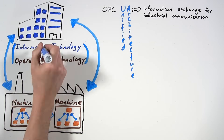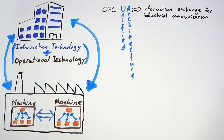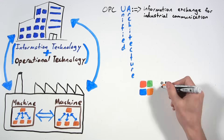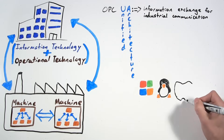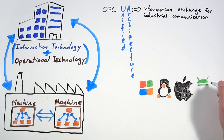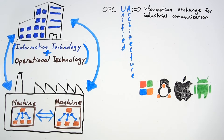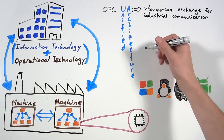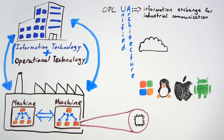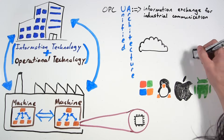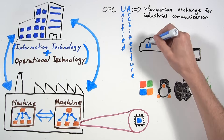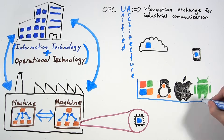It can be used with any software platform — Windows, Linux, Mac, Android — you get the picture. And this makes OPC UA scalable, from minimal embedded controllers to massive cloud infrastructures, even mobile devices.